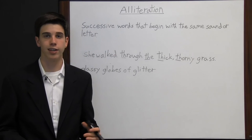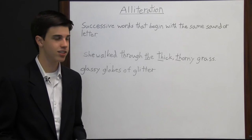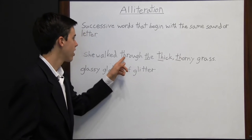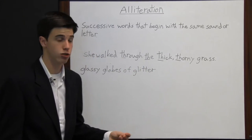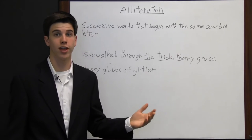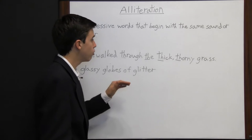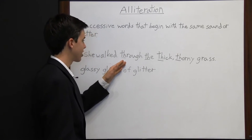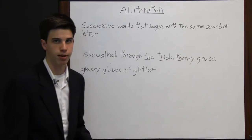This is a literary technique, and literary techniques generally are there for a reason. In this case, it's to show the difficultness of getting through the grass, because saying four words that start with "th" in a row is somewhat difficult — it's kind of a tongue twister. Through the thick, thorny grass — they're trying to help the reader understand the difficulty of walking through this grass by making it difficult to say.